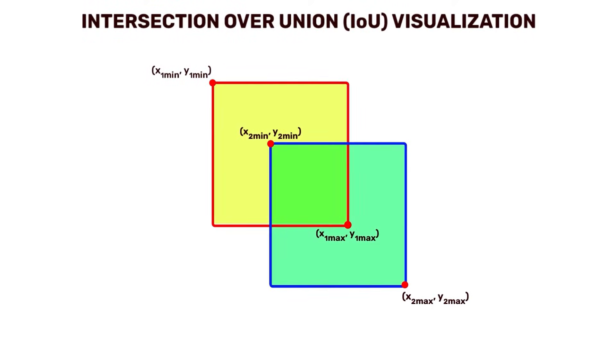we can observe two overlapping bounding boxes. One of them is the ground truth represented by A1, and the other is the prediction represented by A2.